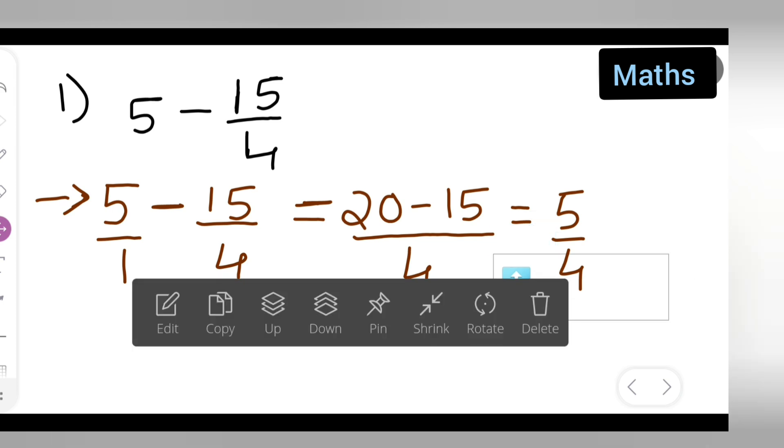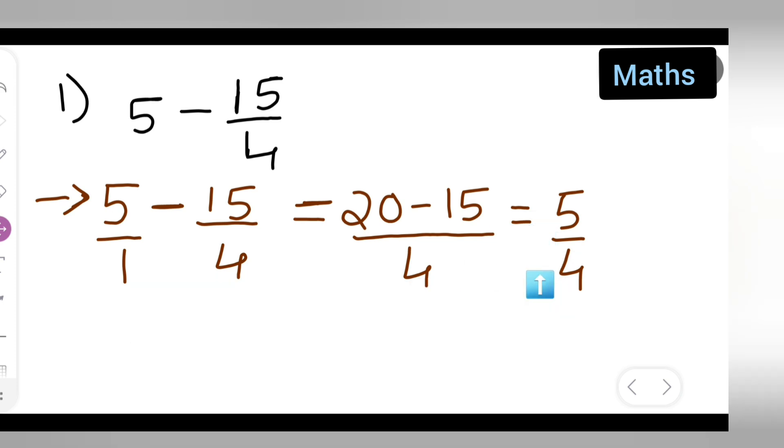20 minus 15 will give you 5 and then 4. So our answer is 5 upon 4. I hope you all have understood how to subtract 5 minus 15 upon 4 and thanks for watching.